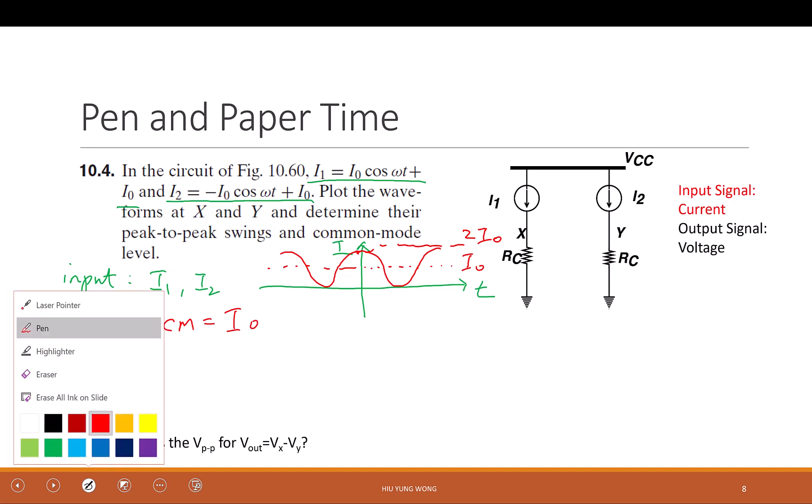How about for the second one, for I2? It's the same. Again, it offsets by I0, but it has a negative phase. So when time equals zero, it is negative one, then you get negative I0. So when time is zero, this is negative I0 plus I0. So they're completely opposite. You get something like this. So it's a differential signal.